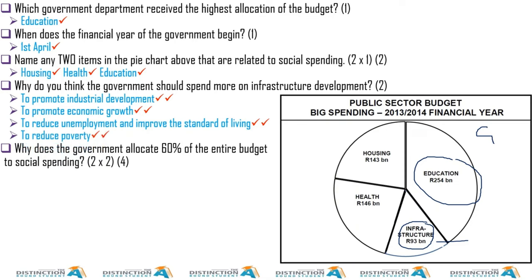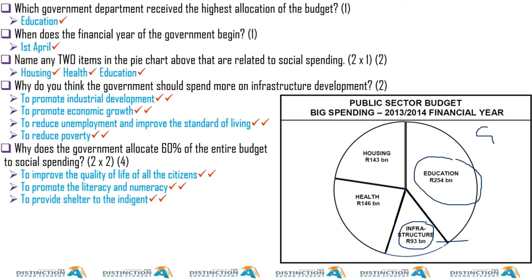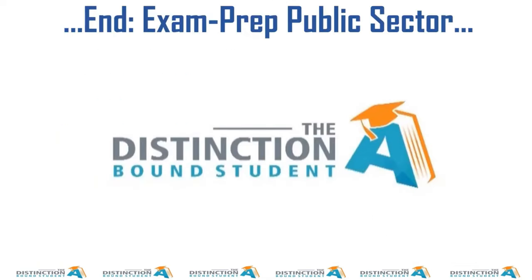To promote industrial development, to promote economic growth, to reduce unemployment and improve the standards of living, to reduce poverty. Why does the government allocate 60 percent of the entire budget to social spending? To improve the quality of life of all citizens, to promote literacy and numeracy rates, to provide shelter to the unfortunate.